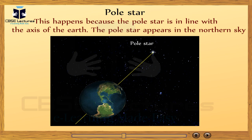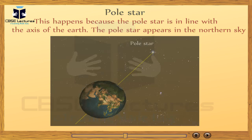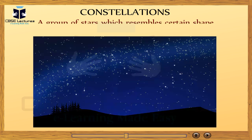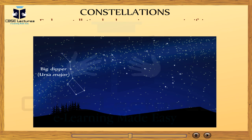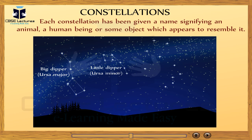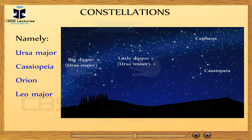Sailors and travelers use the pole star to find their way when they had to travel during the night. What are constellations? A group of stars which resemble a certain shape is called a constellation. Human beings have an ability to recognize shapes and faces, even in formless things like clouds, smoke, etc. Each constellation has been given a name signifying an animal, a human being, or some object which appears to resemble it. Can you name some of them? Ursa Major, Cassiopeia, Orion, Leo Major.